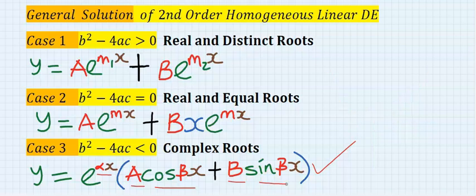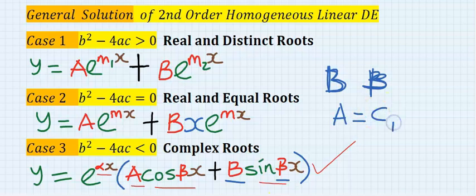In order to resolve the problem between b and beta, that is, this b is this b, but this beta is this. Many lecturers will decide to use A for C1 and B for C2. However, it doesn't change the result.